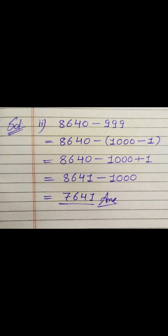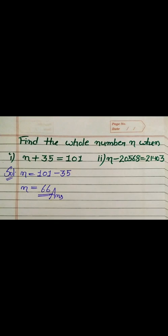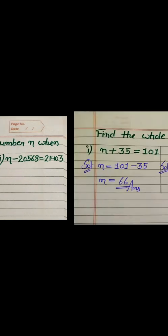Now let's find the whole number n. When n plus 35 equals 101, the 35 shifts to the right-hand side and becomes negative, so n equals 101 minus 35, which is 66. In the second question, n minus 20,568 equals 21,403. The negative 20,568 moves to the right and becomes positive, so after addition n equals 41,971, which is our final answer.